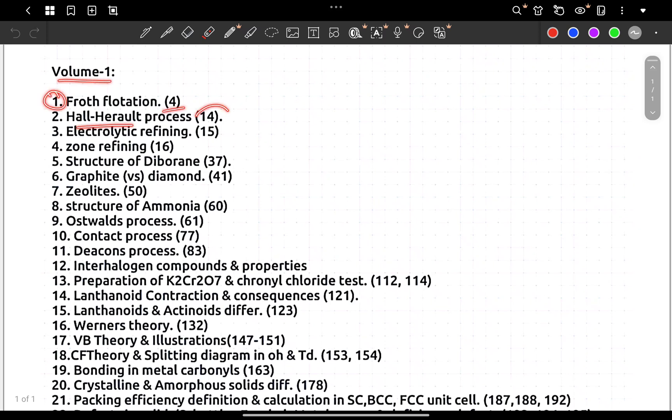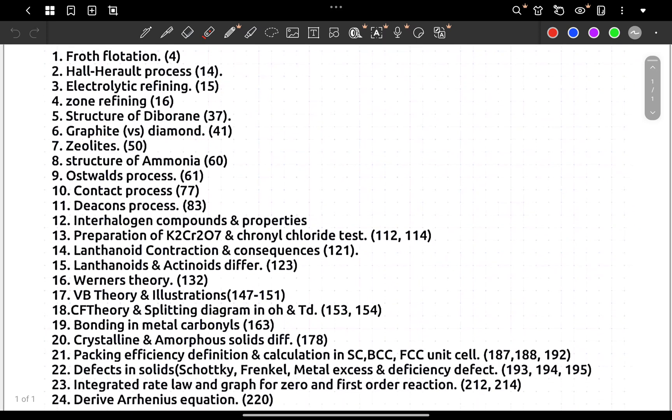Froth flotation page number 4, Hall-Heroult process page 14, Electrolytic refining, Zone refining, Structure of Diborane, Graphite vs diamond, Zeolites on 3 mark. Structure of ammonia 3 mark, 2 mark, but 5 mark.